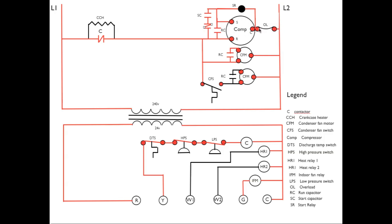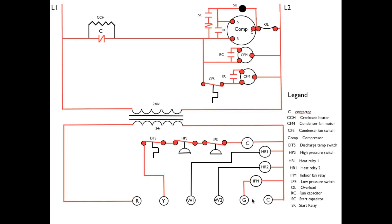If the compressor is drawing way too much power, then OL will open up. This all happens at the same time Y gets energized. Power will also pass from R to G through the thermostat to energize the indoor fan motor.